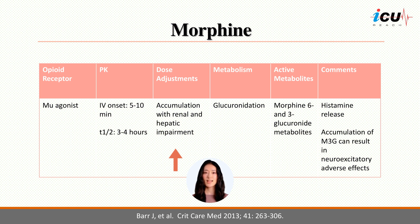Morphine-3-glucuronide (M3G) and morphine-6-glucuronide (M6G) are the major metabolites of morphine. M3G is neuroexcitatory and can increase the risk of delirium. Morphine also causes histamine release resulting in flushing and hypotension. Due to these side effects, morphine is not commonly used in the ICU for pain and sedation.